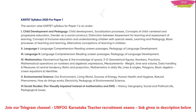In Karnataka TET, you will have two papers — Paper 1 and Paper 2. Let's see the syllabus of Paper 1. You will have six parts in Paper 1. First is Child Development and Pedagogy, the second is your First Language, and third is your Second Language. Then fourth is Mathematics, fifth is Environmental Science, and sixth is Social Studies.